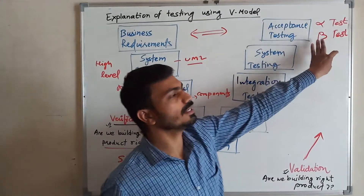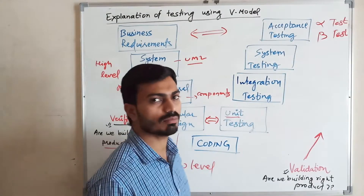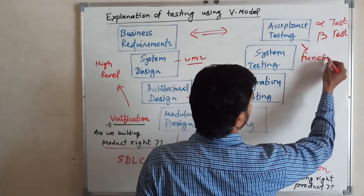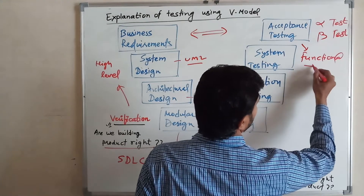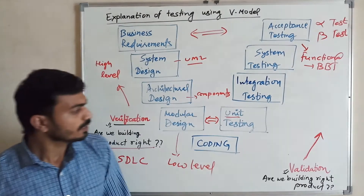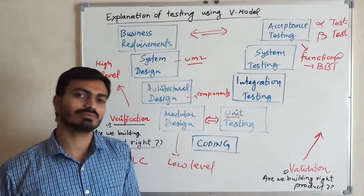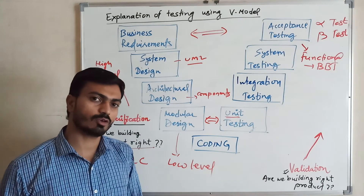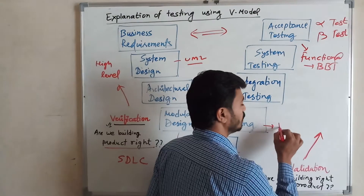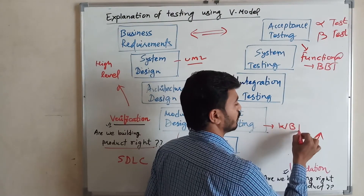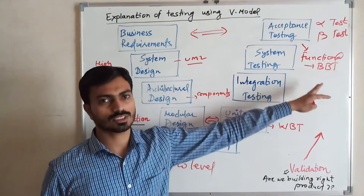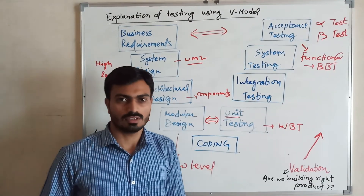In beta testing, we check if functional requirements are satisfied. Functional testing means black box testing — testing the code without looking at internals, testing independent modules. We will see more in the next lecture. Thank you.